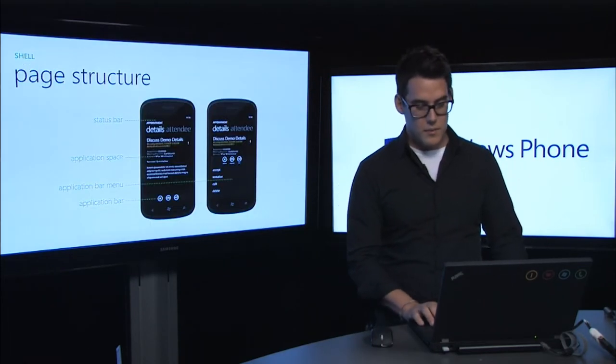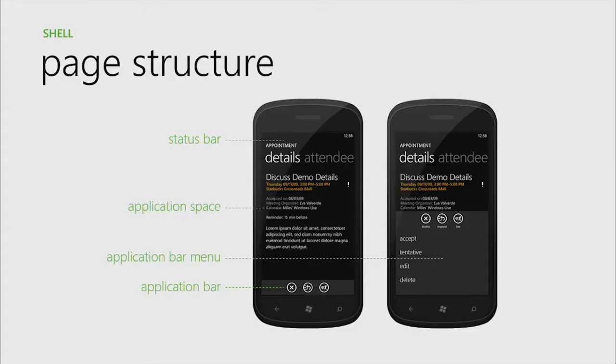The next thing I'm going to talk about is the page structure of the shell. Looking at a Windows Phone, up at the top we have the status bar, where you can get information about connectivity and more. We have the application space — your canvas as a third-party developer — and an application menu bar and app bar when it's collapsed. These are your options and menus where you can put all the different functionality for your application.